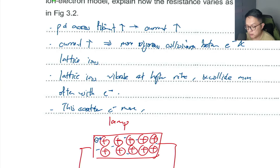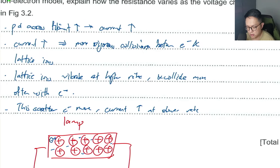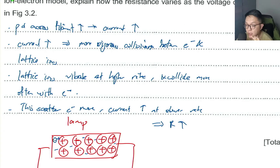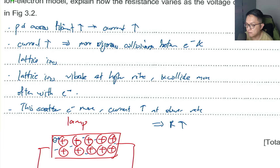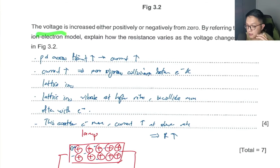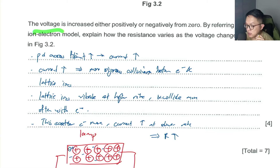So even though you're increasing potential difference and current is increasing, current increases at a slower rate, which means R is increasing. There's no need to talk about temperature here — many of you mentioned temperature increase causing resistance increase, but you have to talk about the actual lattice ions vibrating and causing electrons to collide more regularly. This one is not easy to get all four marks. You can refer to the mark scheme for a cleaner write-up.